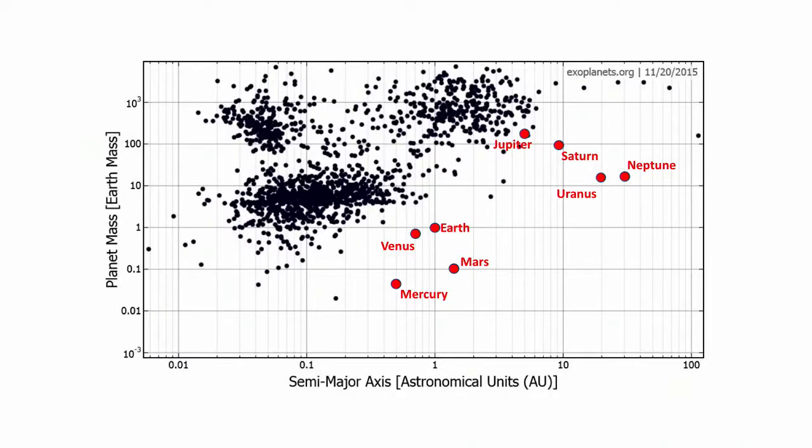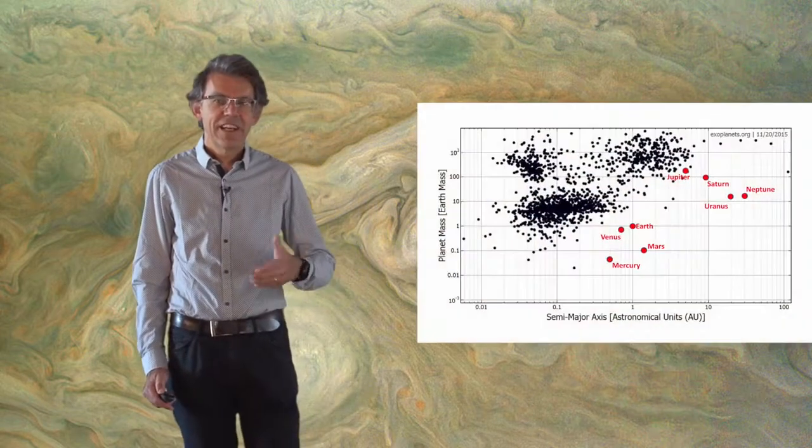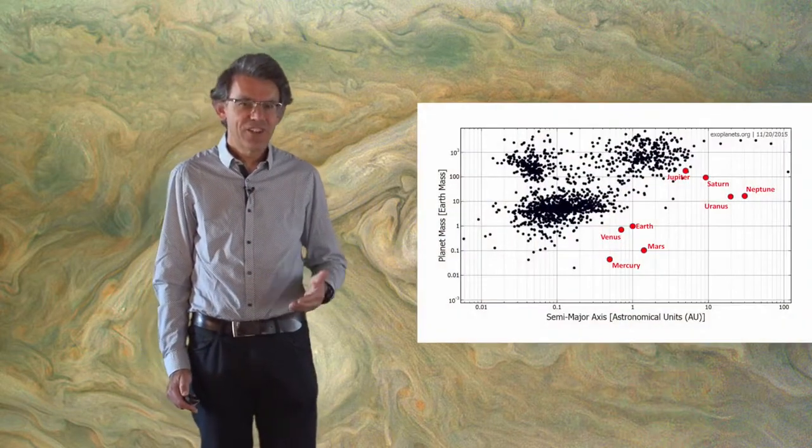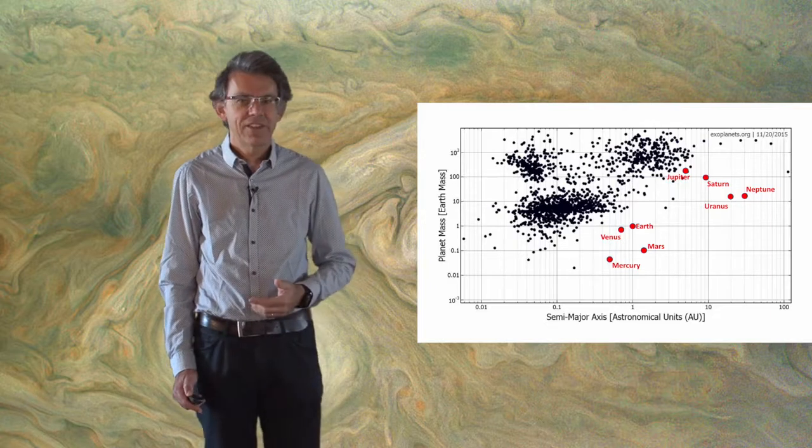This diagram shows the extrasolar planets discovered to date in a plot where the horizontal axis shows the semi-major axis or the size of their orbit, and the vertical axis shows the planet mass. Each black dot is an extrasolar planet and the red dots show the solar system planets for comparison.